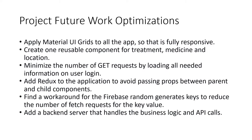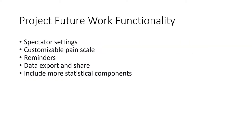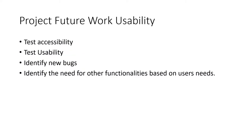This brings me to Project Future Work. This slide shows optimization improvements that can be made for the app to run faster and make it easier to debug and understand the overall code. The next slide contains functionality that still needs to be included for the full functionality of the application. Lastly, testing for usability is the most important future work. Elderly volunteers with chronic pain are needed to test the spectator feature and understand if the application is fully accessible and easy to use. This will also detect errors and bugs, as well as new functionality needed based on user feedback.